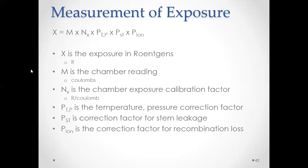Finally, the measurement of exposure involves multiplying several factors together: the chamber reading, the chamber exposure calibration factor, the pressure and temperature correction factor, the correction factor for stem leakage, and the correction factor for recombination loss. Multiplying all of these together gives the exposure.